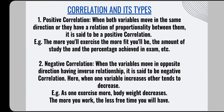Now let's look at how many types of correlation there are. The first type is positive correlation. When both variables move in the same direction and have a proportionality relationship between them, that is positive correlation. For example, the more you will exercise, the more fit you will be. Exercise is one variable and fitness is another, and both move in the same direction — so it's a positive correlation.